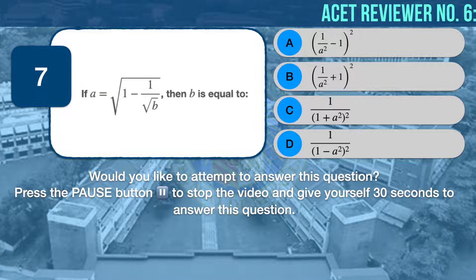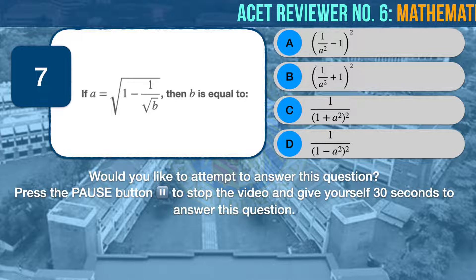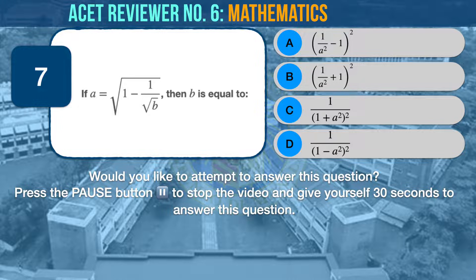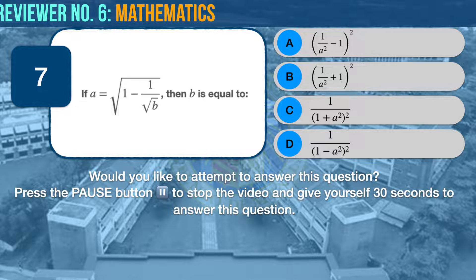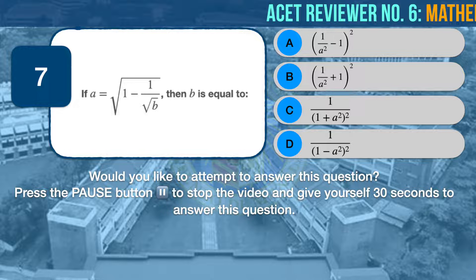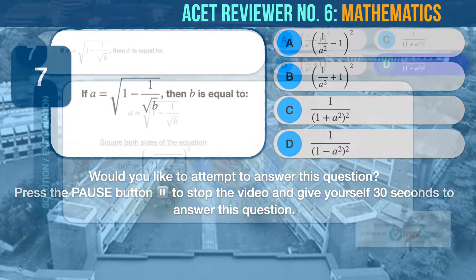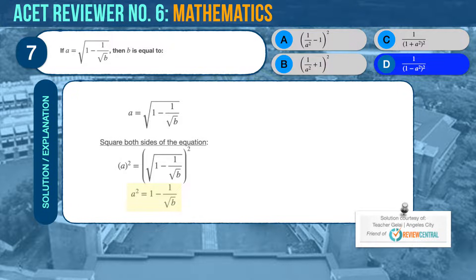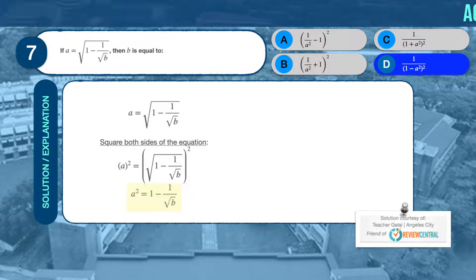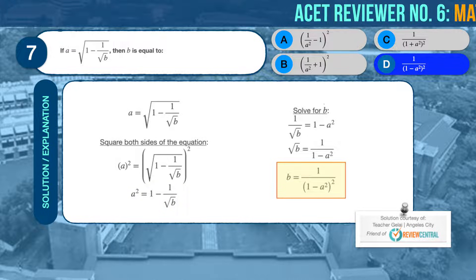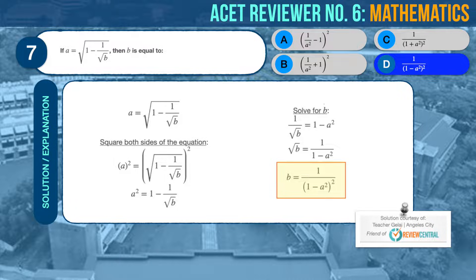Math question number 7. If A is equal to the square root of quantity 1 minus quantity 1 over square root of B, then B is equal to: A, the square of quantity 1 over A squared minus 1; B, the square of quantity 1 over A squared plus 1; C, 1 over the square of quantity 1 plus A squared; D, 1 over the square of quantity 1 minus A squared. First, let's square both sides of the equation. We should end up with the equation A squared equals 1 minus the quantity 1 over the square root of B. Now we can solve for B. We should arrive at 1 over the square of the quantity 1 minus A squared. Therefore, the correct answer is D.